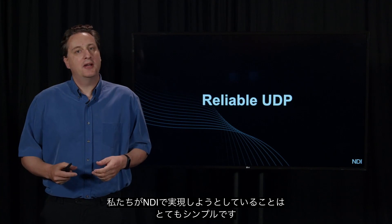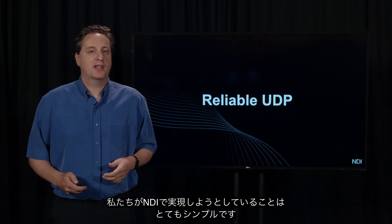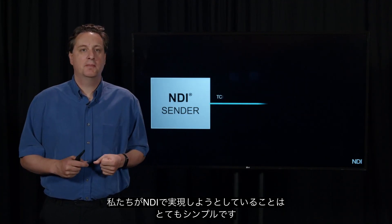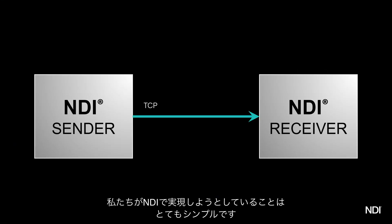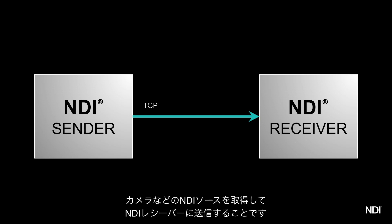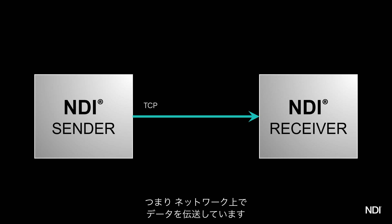When you take a step back and think about what we're trying to do with NDI, what we do is really quite simple. We take an NDI source — that could be a camera like we're using here, we're using NDI cameras — and you want to send it to an NDI receiver, like we're doing here, to produce a show like this. You're just transferring this data over the network.